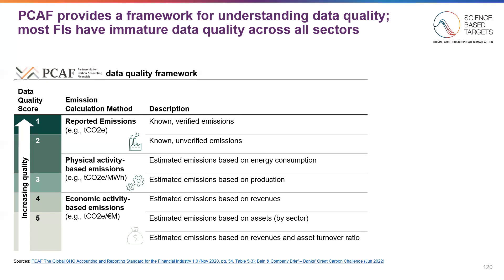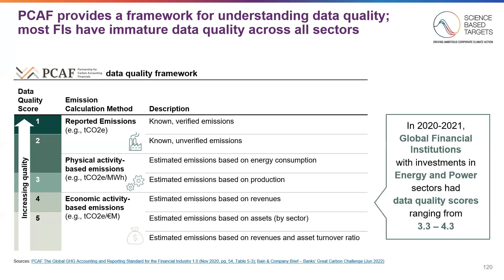It's important to note that while the ambition should be to reach a high data quality score for your portfolio, the reality is that from 2020 to 2021, according to Bain's June 2022 study of banks' great carbon challenges, global financial institutions with investments in the energy and power sectors had scores ranging from 3.3 to 4.3 — mostly based on production and revenue level estimates.